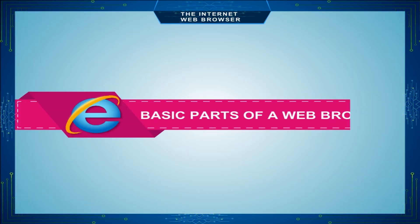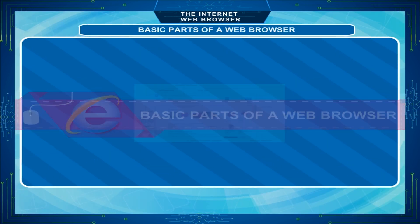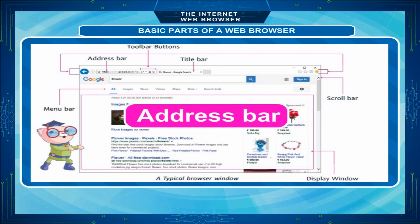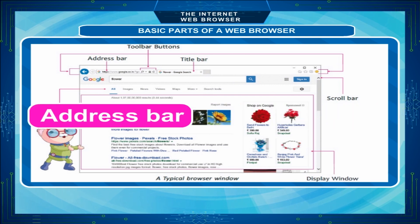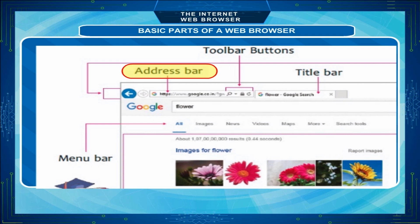Basic Parts of a Web Browser. The parts of a browser include the following. Address Bar: This is the box at the top of your browser window that displays the entire URL or website address.